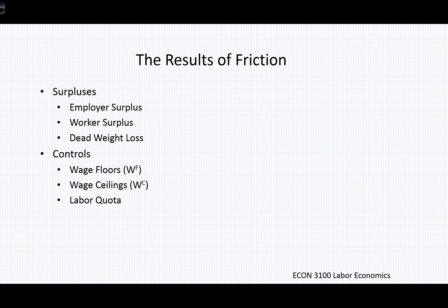Let's think about what the results of friction might be and what their determinants might be. First, we're going to consider a couple of different kinds of exogenous policy controls that might step into the market — wage floors, wage ceilings, and labor quotas. These may create friction in the market, and we'll see the effect not only graphically but also quantified in terms of employer surplus, worker surplus, and deadweight loss.